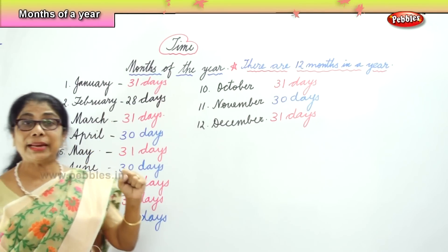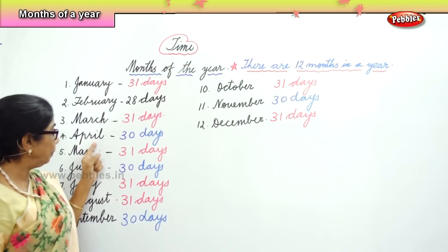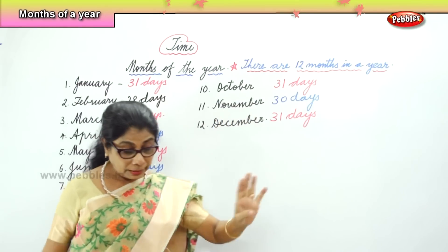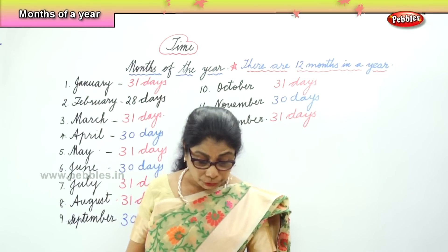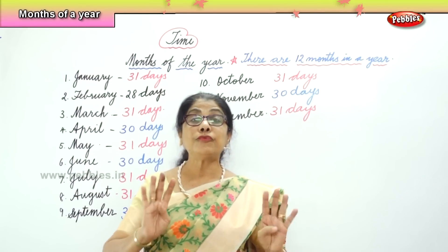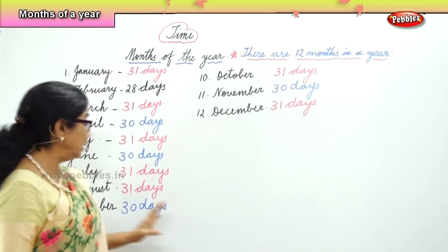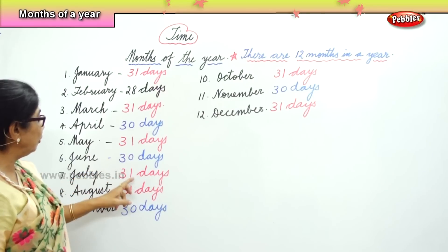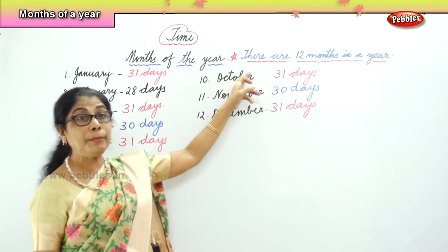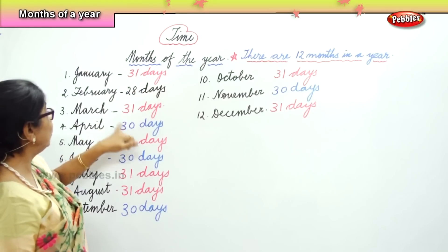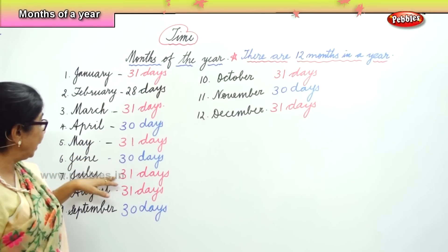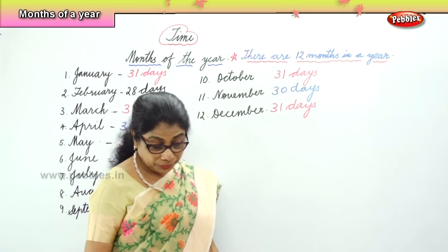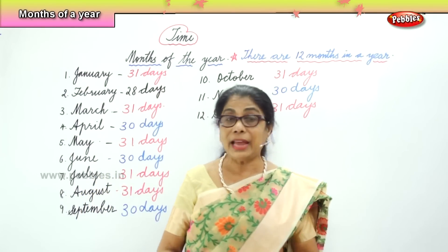Look at all the months that have thirty days. We have April, June, September and November — four months have thirty days. The rest — seven months have thirty-one days: January, March, May, July, August, October and December.